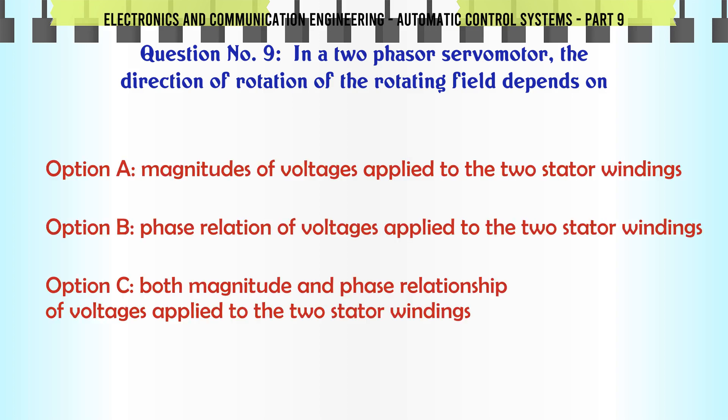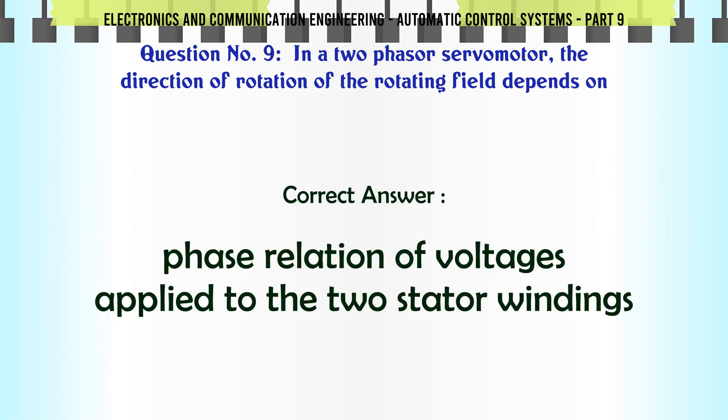In a two-phase servomotor, the direction of rotation of the rotating field depends on: A. Magnitudes of voltages applied to the two stator windings, B. Phase relation of voltages, C. Magnitudes of voltages applied to the two stator windings, D. None of the above. The correct answer is: Phase relation of voltages applied to the two stator windings.